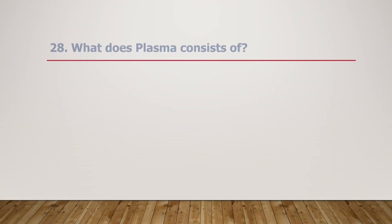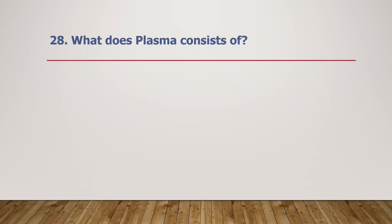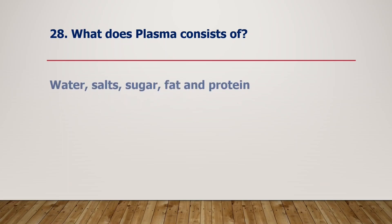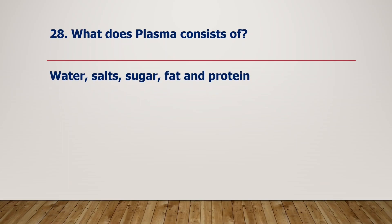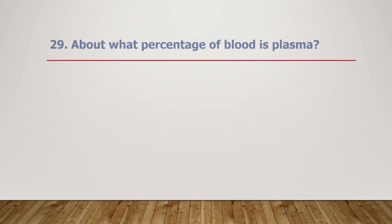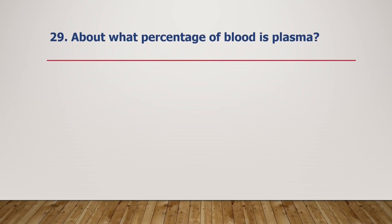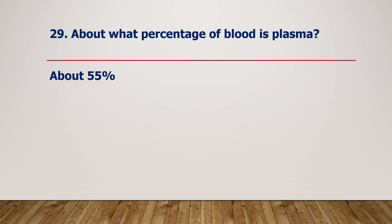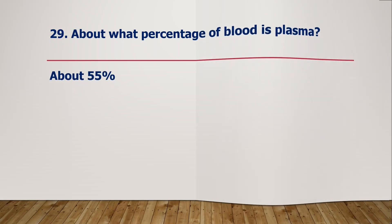What does plasma consist of? Water, salts, sugar, fat, and protein. About what percentage of blood is plasma? About 55% of blood is plasma.